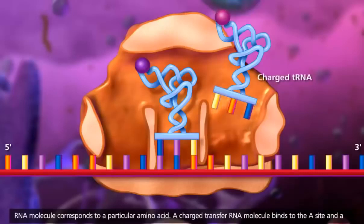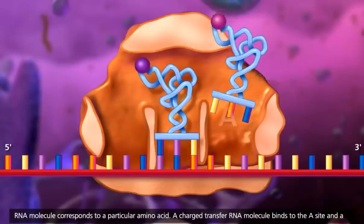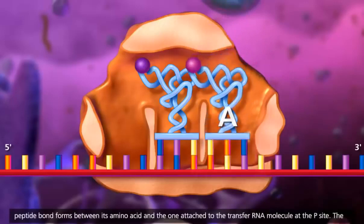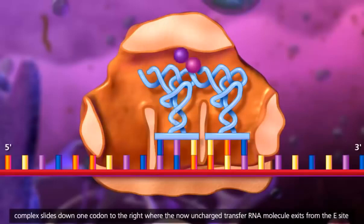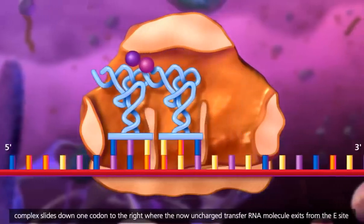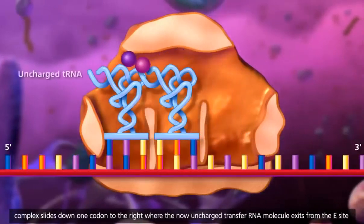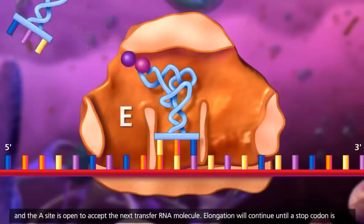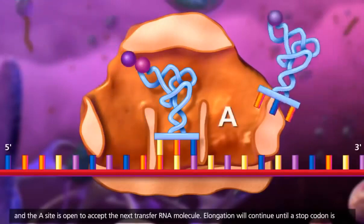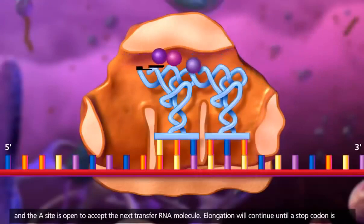A charged transfer RNA molecule binds to the A site and a peptide bond forms between its amino acid and the one attached to the transfer RNA molecule at the P site. The complex slides down one codon to the right where the now uncharged transfer RNA molecule exits from the E site and the A site is open to accept the next transfer RNA molecule.